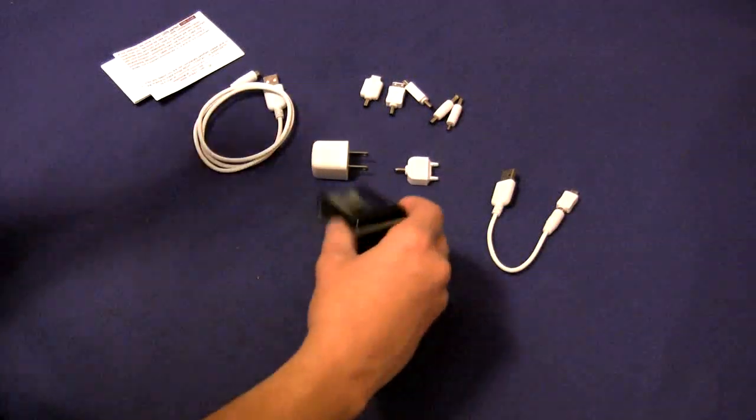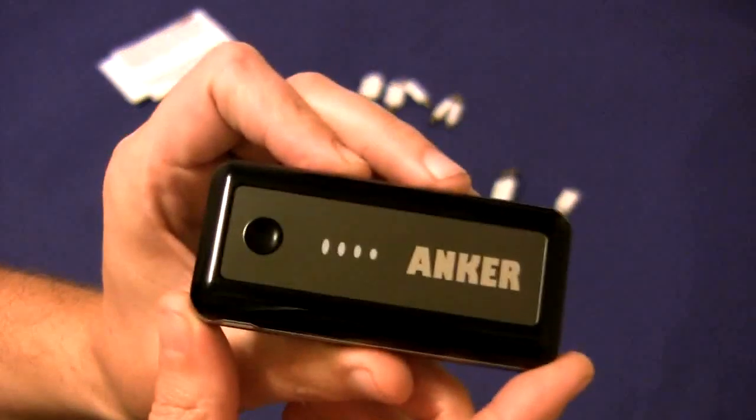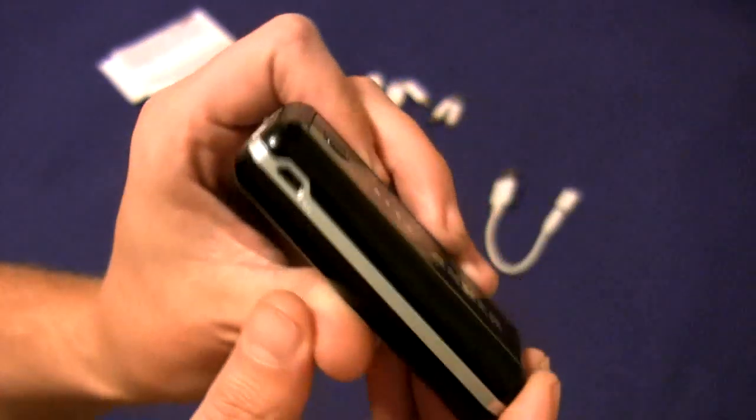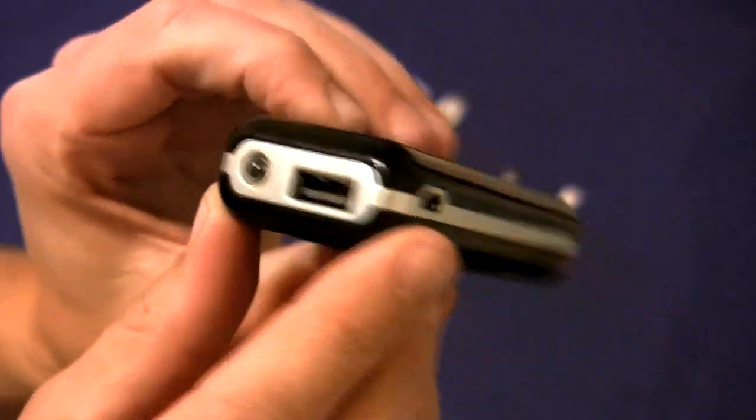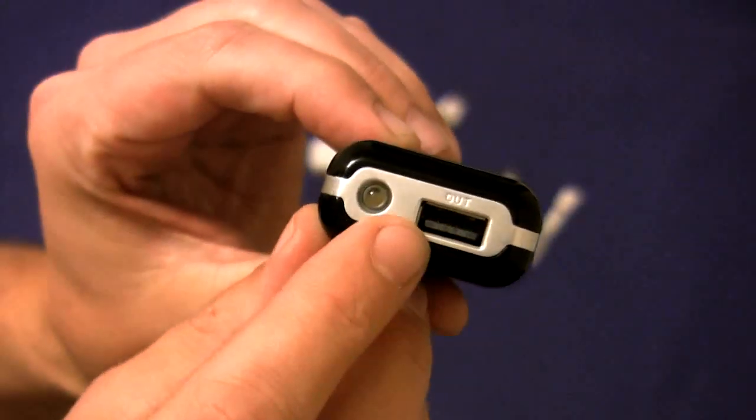So here we are. Here's the actual USB charging device. I'll try to get a close up for you there if I can get everything in focus. Here's the input where you actually charge the unit up. Here's the output for the USB. I'll give you a look around the outer edges there.